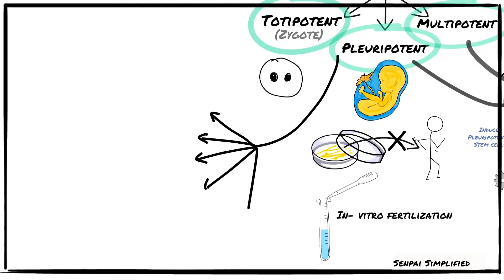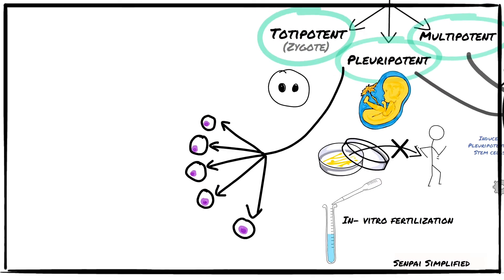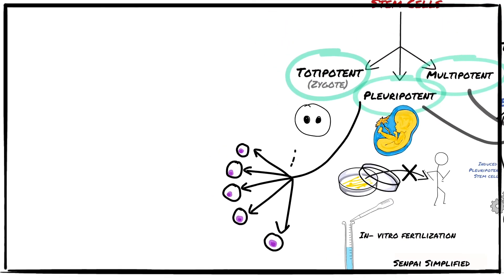Hemopoiesis: all blood cells are derived from pluripotent stem cells, which divide into five different forms of unipotent stem cells. These unipotent stem cells are not readily histologically distinguishable; they divide and differentiate to give rise to mature cell types which are distinguishable. The rate of division is determined by erythropoietin, interleukins, and colony stimulating factors.